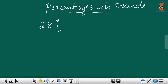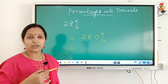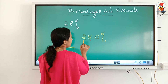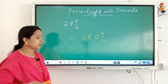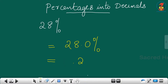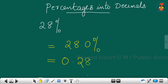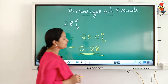Look at one example: 28 percent. We drop the percentage sign and move the decimal point 2 places to the left side — first place, second place — and the answer is 0.28. I hope it is clear. 28 percent means 0.28.